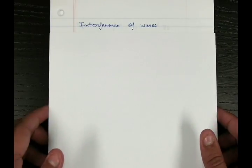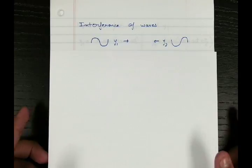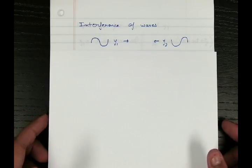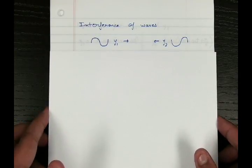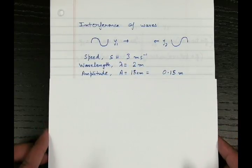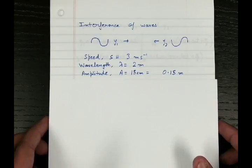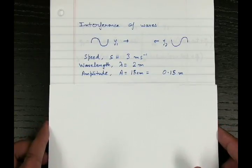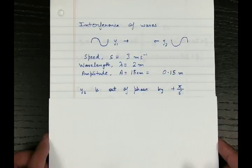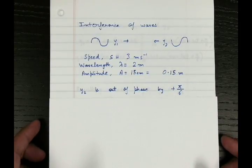We have two waves, y1 and y2. y1 is travelling to the right and y2 is travelling to the left. Both waves have equal speed of 3 meters per second, equal wavelength of 2 meters, and equal amplitude of 0.15 meters. We are given that y2, the wave travelling to the left, is out of phase by positive pi by 6.